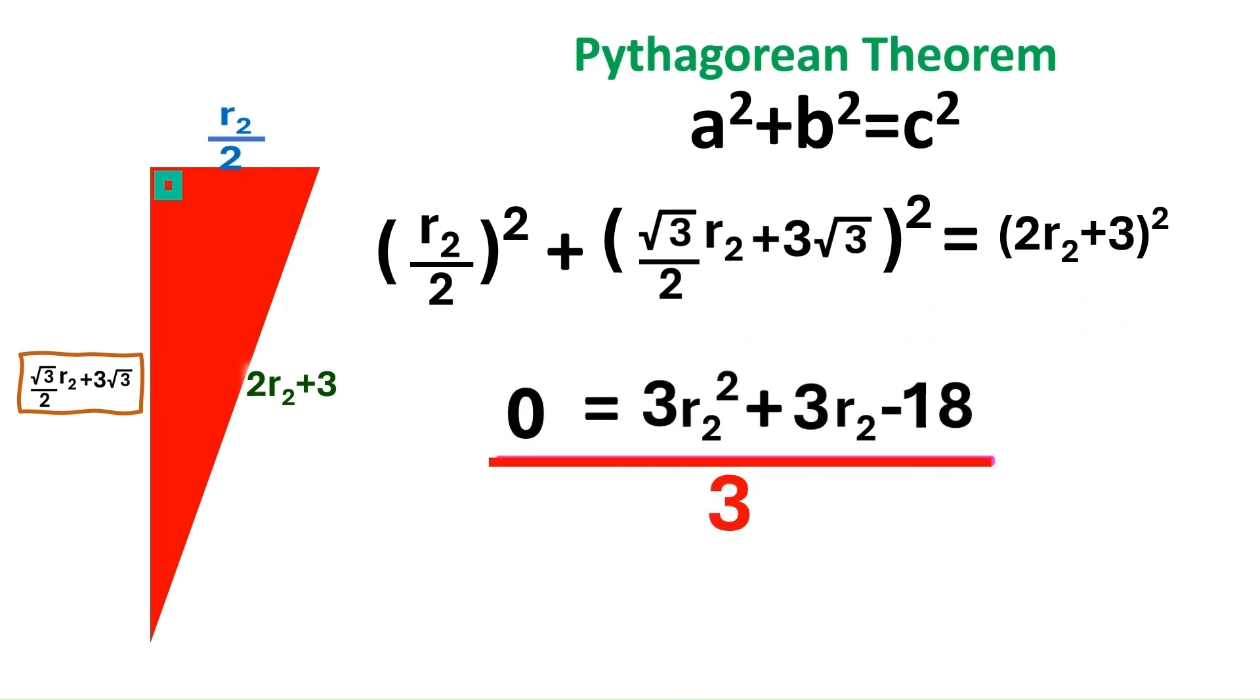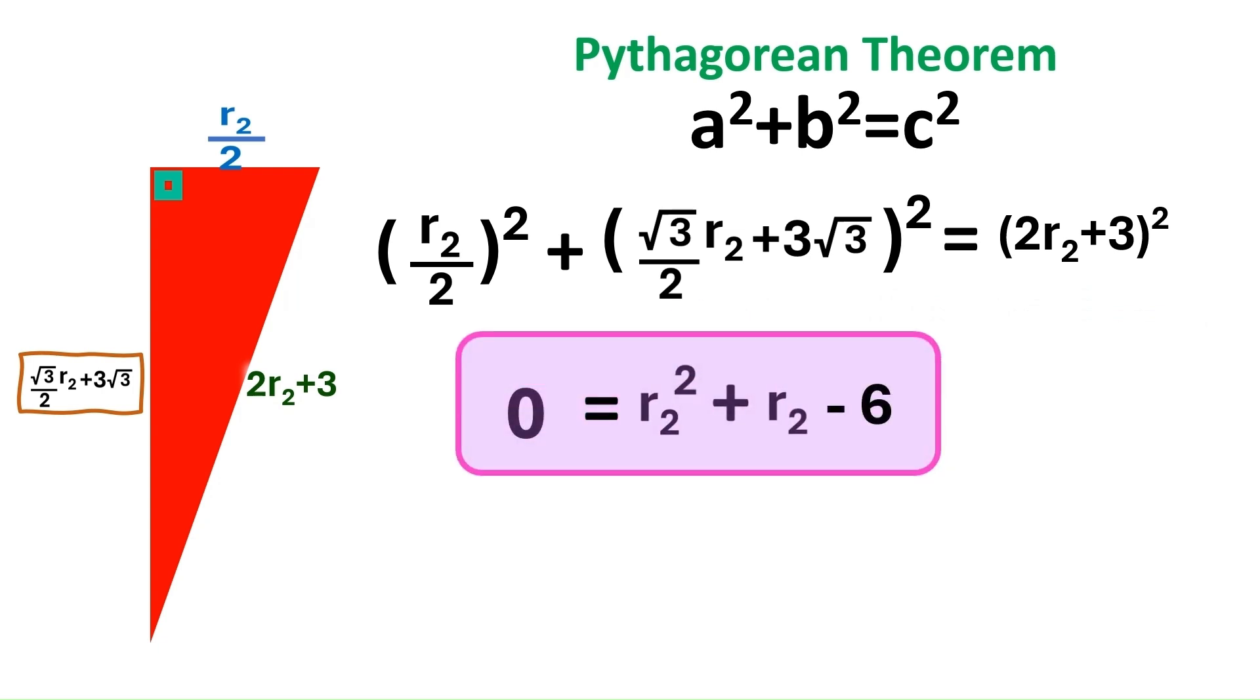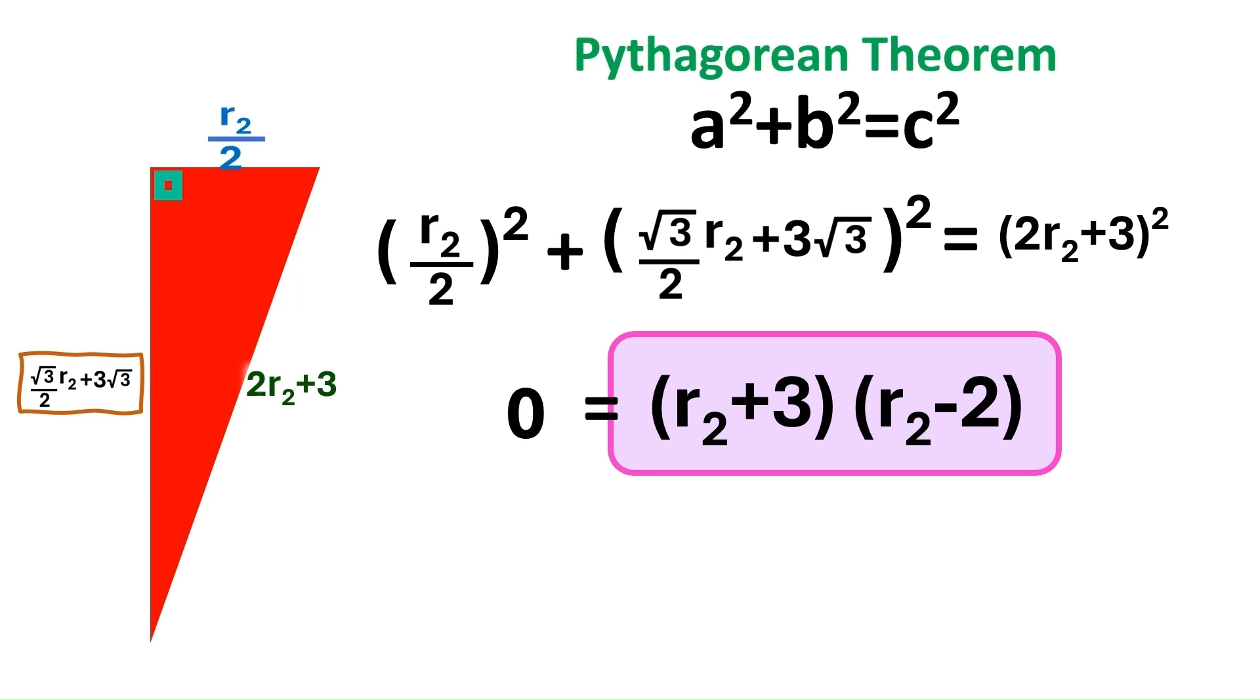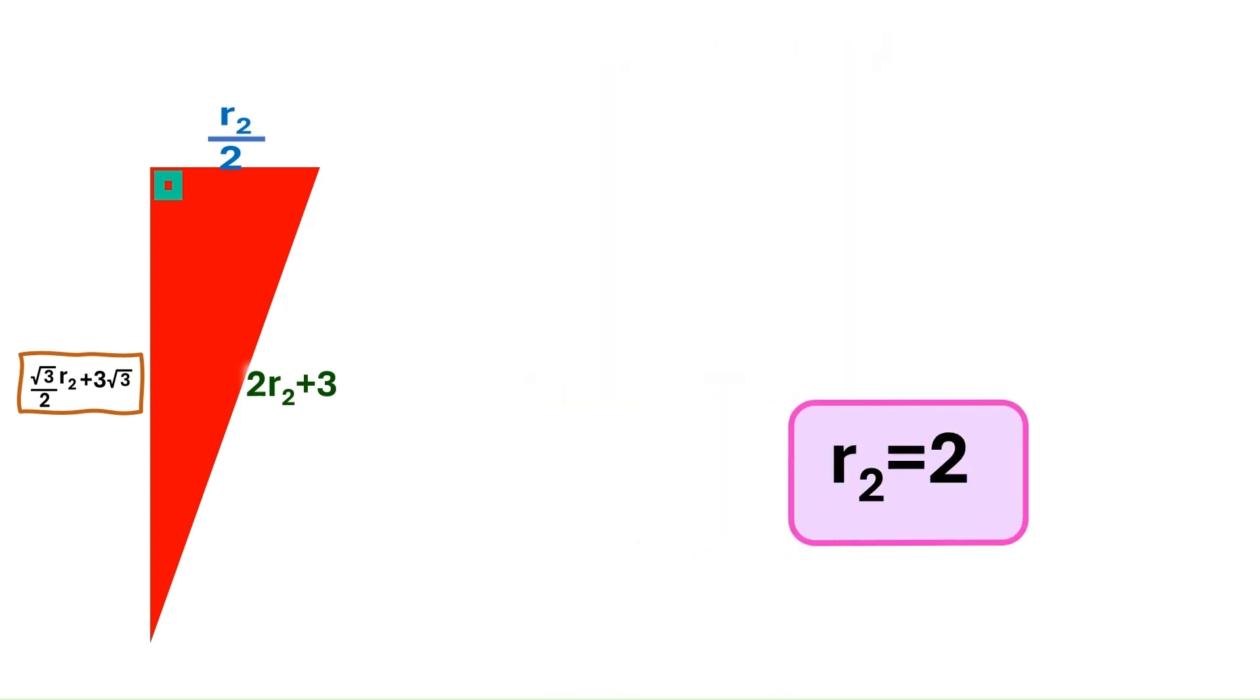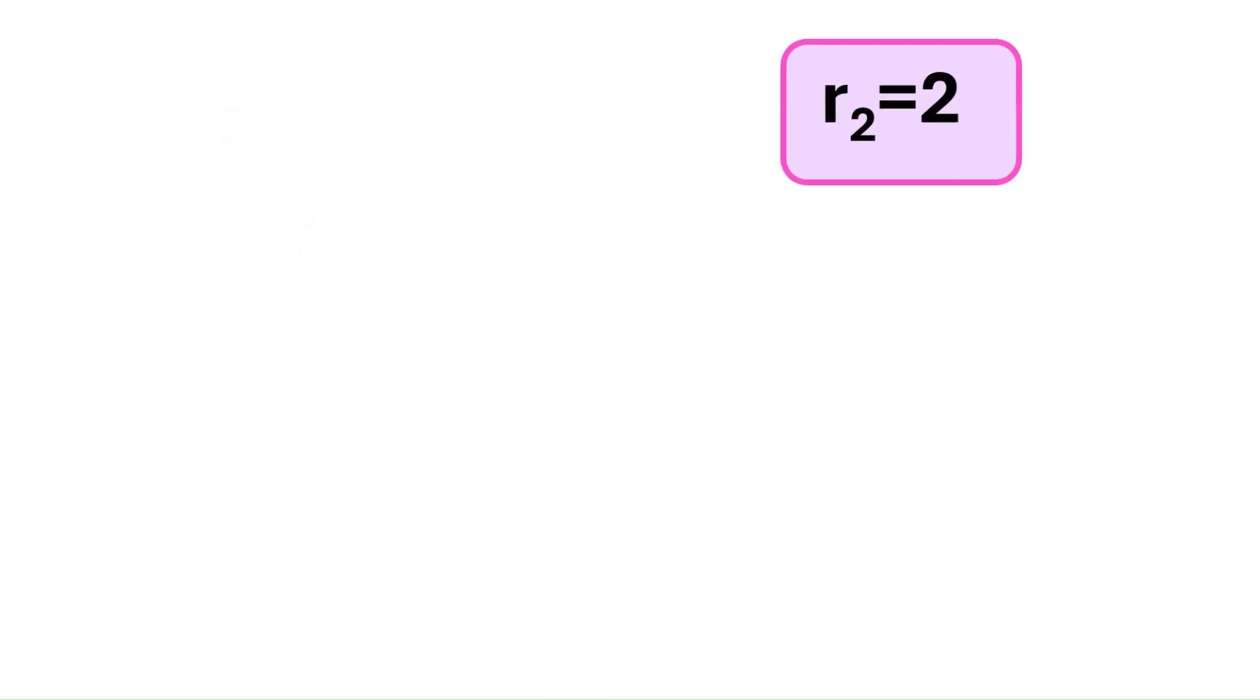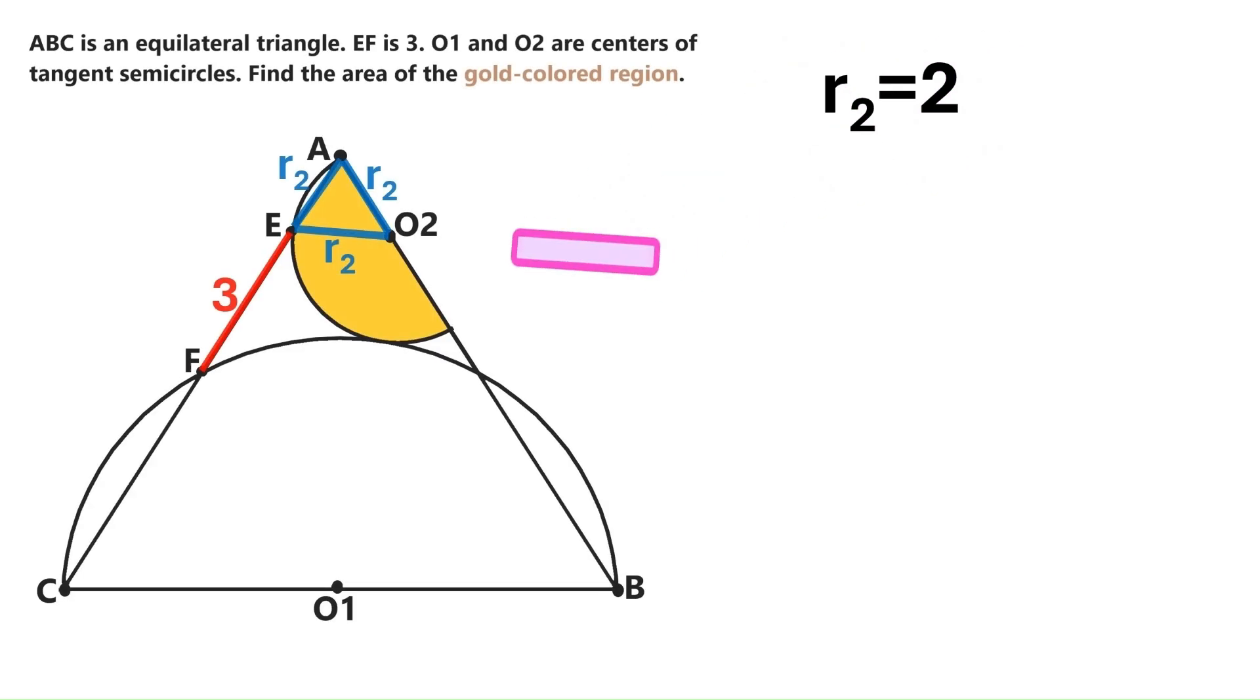Next, we divide everything by 3. And we get this quadratic equation, which can be factorized into this. That means R2 is either minus 3 or plus 2. Well, we can't have a negative radius, can we? That leaves us with plus 2. Let's put this finding up here and go back to the original image.